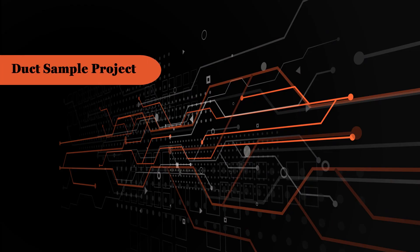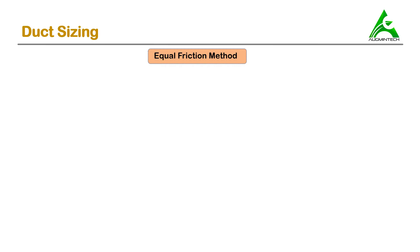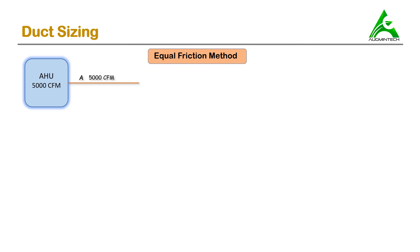Our topic for today is duct designing — a sample project of duct sizing using the equal friction method. There is an AHU of 5000 CFM capacity. This AHU provides 5000 CFM to the first section of the duct, which we'll call section A. From section A, 1000 CFM is taken by diffuser number one.